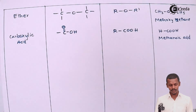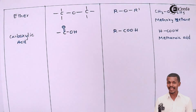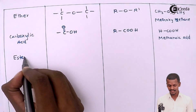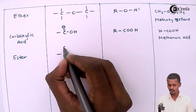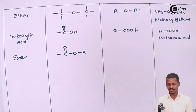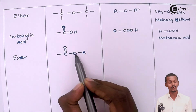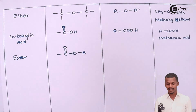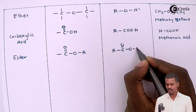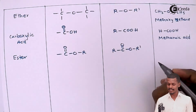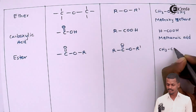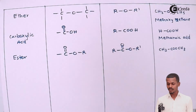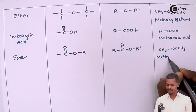Related to carboxylic acids, if the H in –COOH is substituted with an R group, the compound becomes an ester. Esters are known for the group –C(=O)OR. The general formula is RC(=O)OR'. An example is CH3COOCH3. The name of this compound is methyl ethanoate.